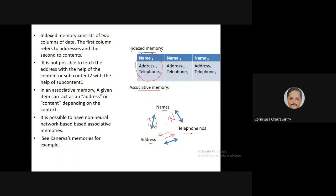In index memory, the index links you to name, address, and other fields, and these arrows are unidirectional — you cannot go from address back to index. Whereas in associative memory it's bi-directional or multi-directional: there are multiple items and each can act as a cue to all the others.